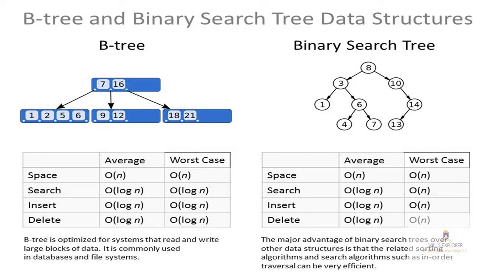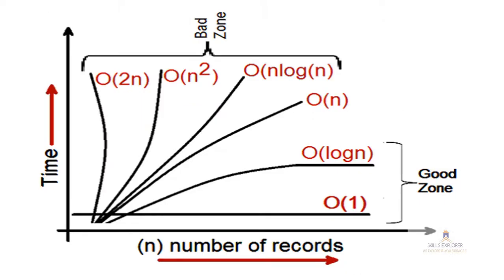But agar aap compare kijiye worst case — B-tree me worst case kya hai: O(log n), lekin worst case binary search tree me kya hai: O(n). For example, total 16 nodes hain. Worst case O(n) means 16 operations lagengi, but log n me: 16 equals 2 to the power 4, so only 4 operations se search, insert, and delete ho jata hai. Log n, O(n) se bahut kam hai, to B-tree me performance fast hogi — jo hamein disk access aur physical media storage me advantage milta hai.